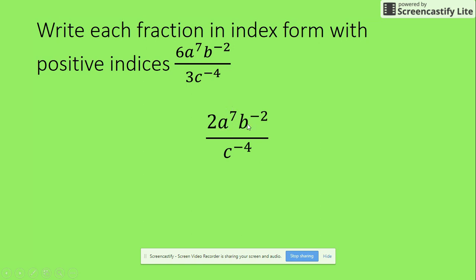So the a^7 can stay. The b to negative 2 is going to go down to the bottom. And the c to negative 4 is going to go up to the top. And it's going to look like this: 2a^7b*c^4 on top, c^4 over... sorry, a^7c^4 over b^2. You could do this. I want you to go and give it a try for me.